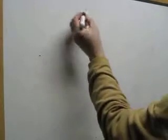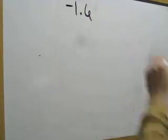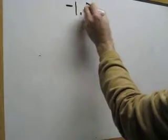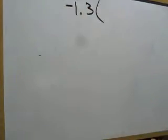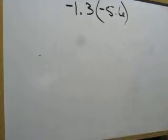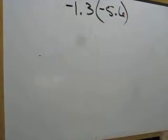But let's continue on with this lesson by throwing in some that are negative. So the book gives us 1.3 and they're multiplying that times negative 5.6.